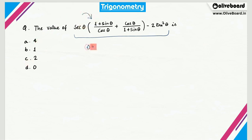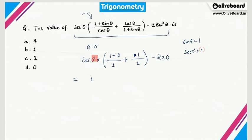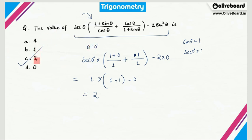If I let theta = 0°, this equation becomes: sec 0° × (1 + sin 0°)/(1 + cos 0°) + (1 − 2 tan²0°). Sin 0° = 0, cos 0° = 1, tan 0° = 0, sec 0° = 1. So this gives: 1 × (1/(1+0)) + (1+0) − 2×0 = 1 × 1 + 1 − 0 = 1 × 2 = 2. So 2 is the direct answer, and option C is correct. In this type of problem, just assume a value of theta and tally with the options provided.